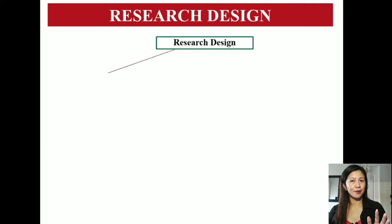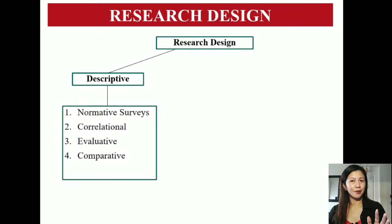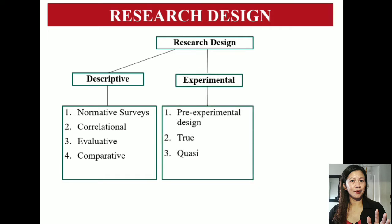Quantitative research designs may also be grouped as follows: descriptive, with subtypes normative survey, correlational, evaluative, and comparative; experimental design, with subtypes pre-experimental, true-experimental, and quasi-experimental design; and historical.